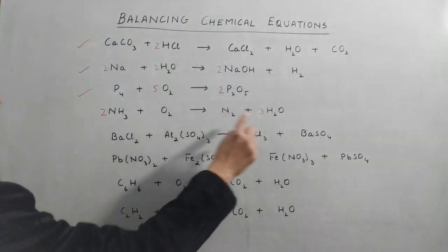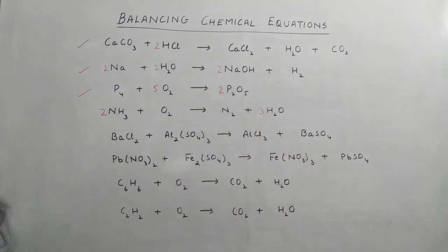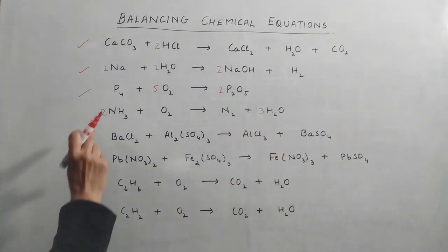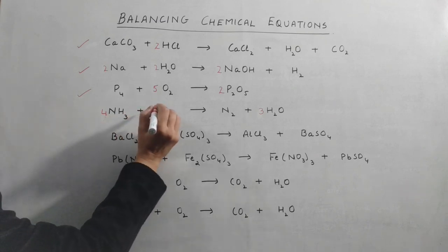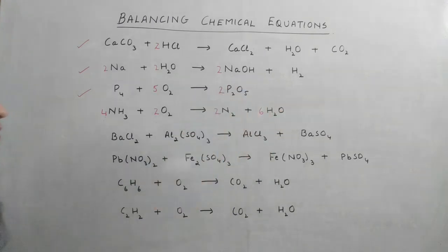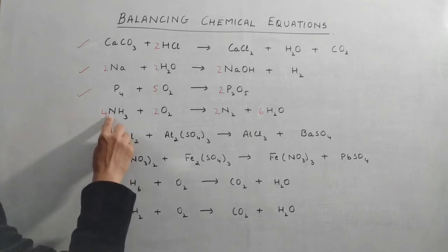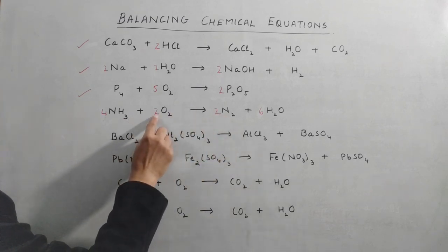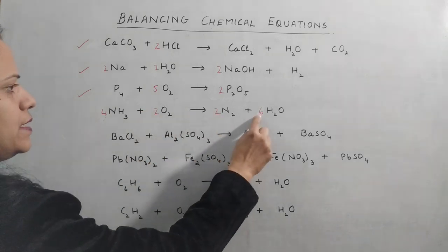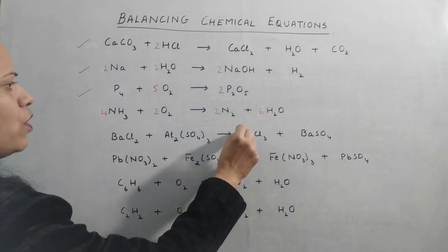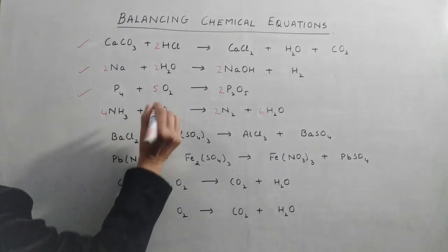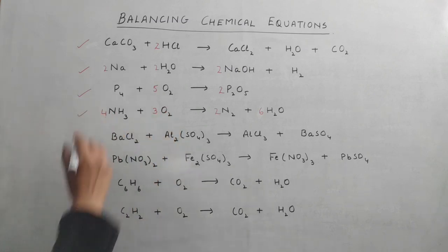Coming to oxygen: there are two atoms on the left and three on the right — again an odd-even mismatch. We multiply the entire equation by two. The coefficient on NH₃ becomes four, O₂ gets a coefficient of 2, N₂ gets 2, and H₂O gets six. Rechecking: four nitrogen each side, twelve hydrogen each side. For oxygen, we need six on the right, so we change O₂'s coefficient to 3 — giving three times two equals six. The fourth equation is now balanced.